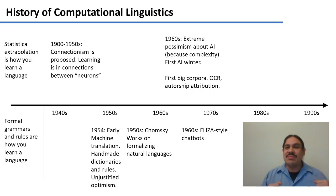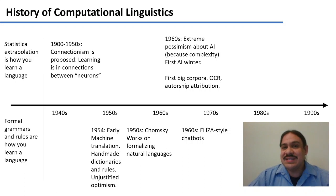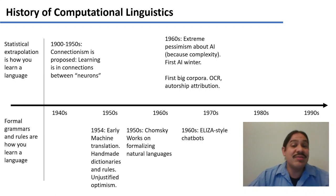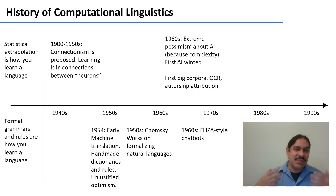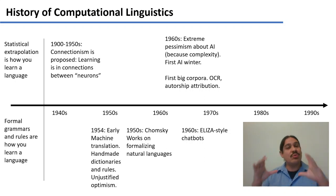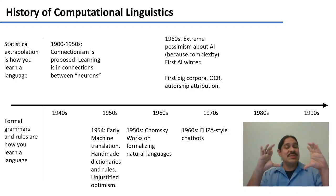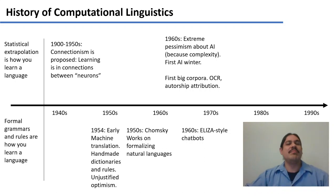The first million-word corpus for English was created in the early 60s, and people were working on applications like optical character recognition and authorship attribution — trying to figure out who wrote a document based on how often they used certain words.